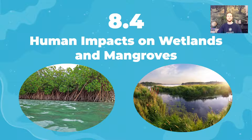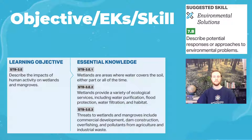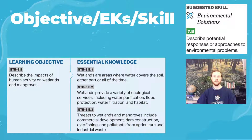Hey everybody, it's Mr. Smedes and welcome to APES video notes for topic 8.4, which will cover human disturbances to mangroves and to wetlands. Our objective for the day is to be able to describe the human activities that have impacts on wetlands and on mangroves, and the skill we'll practice at the end of today's video will involve describing a solution to an environmental problem.